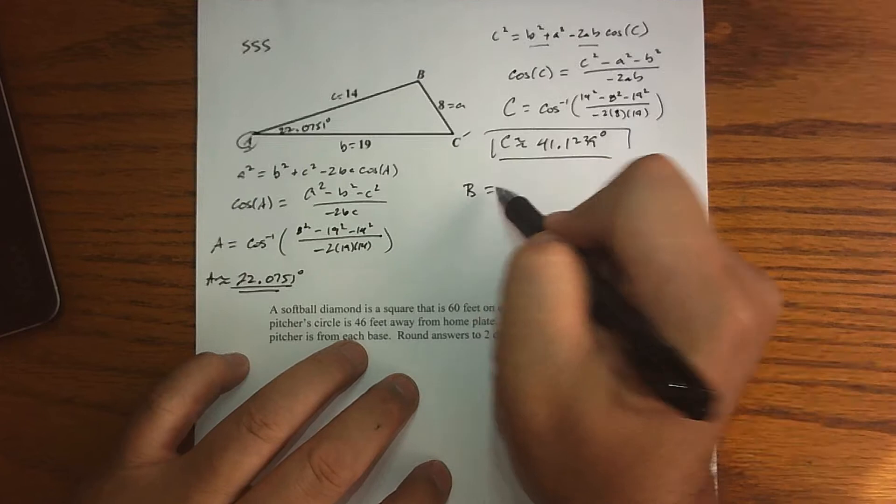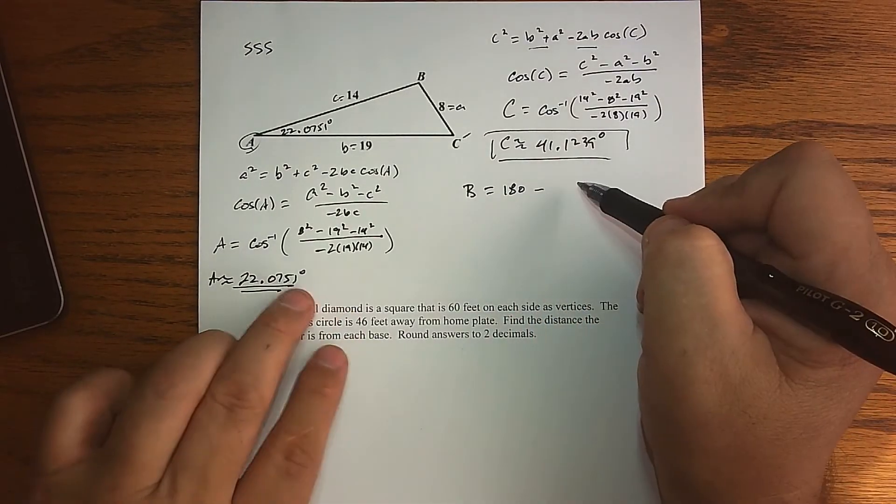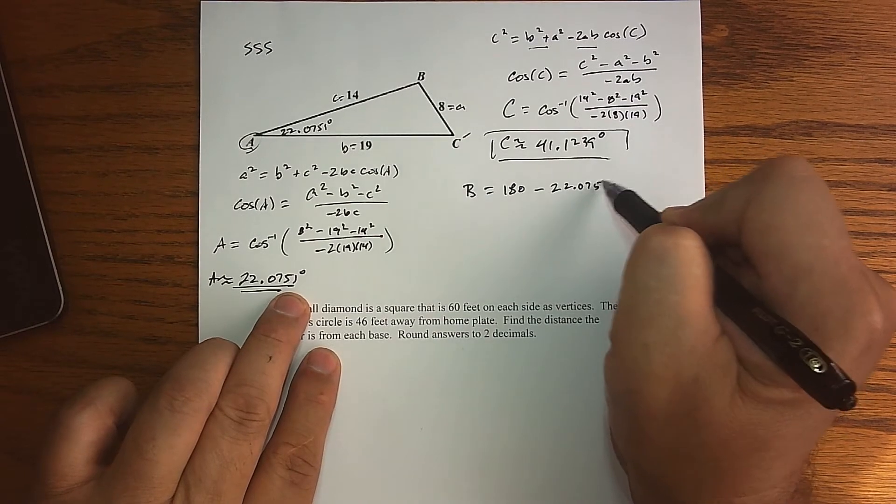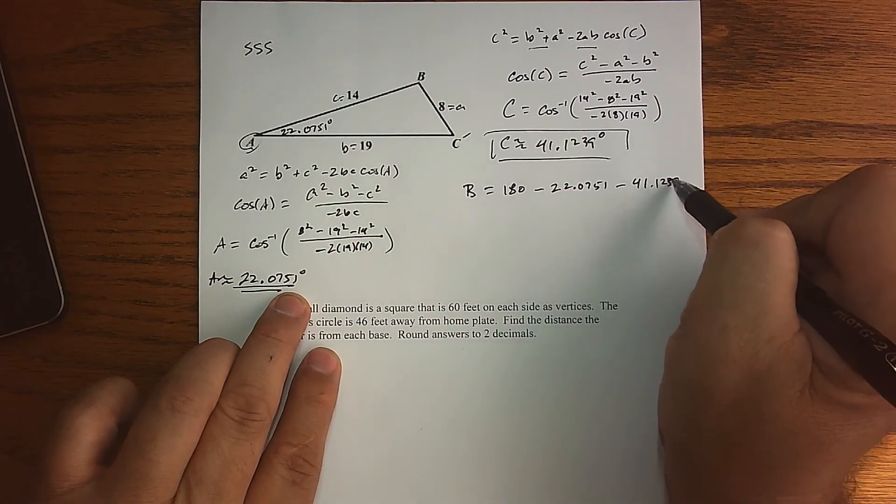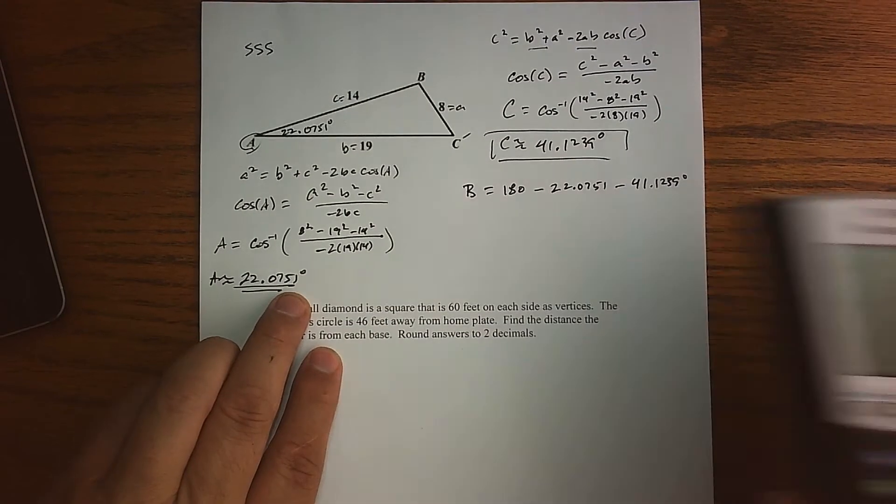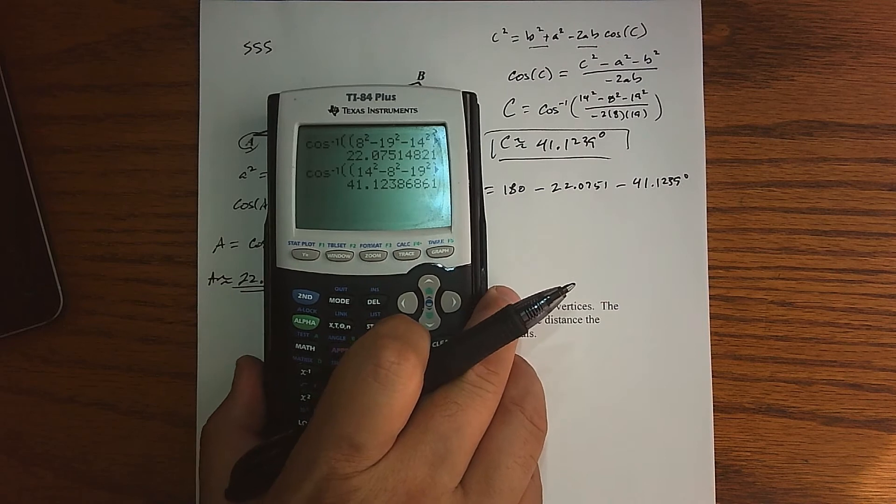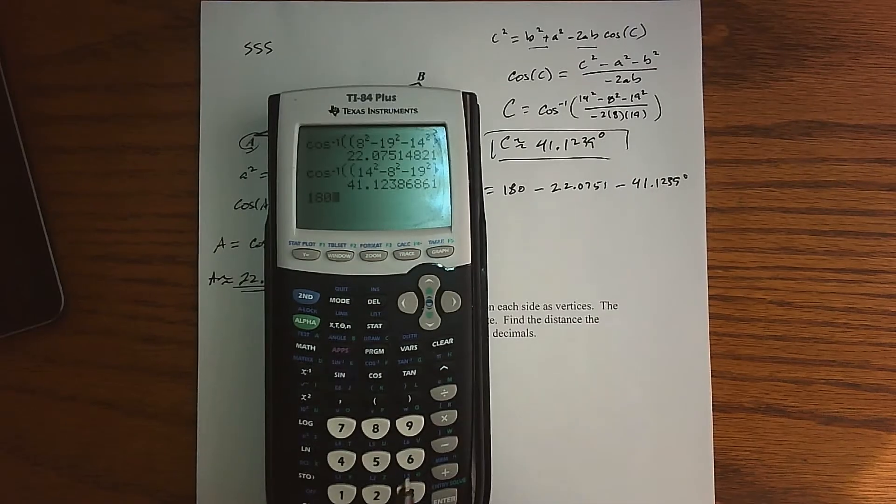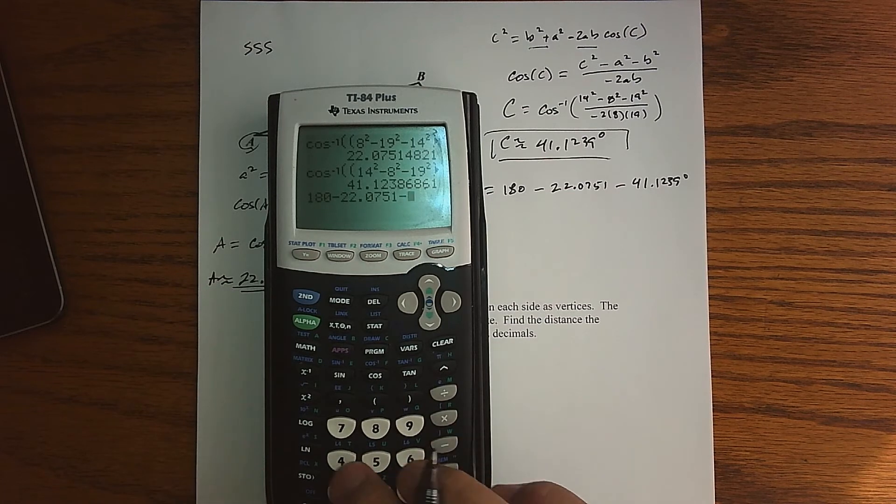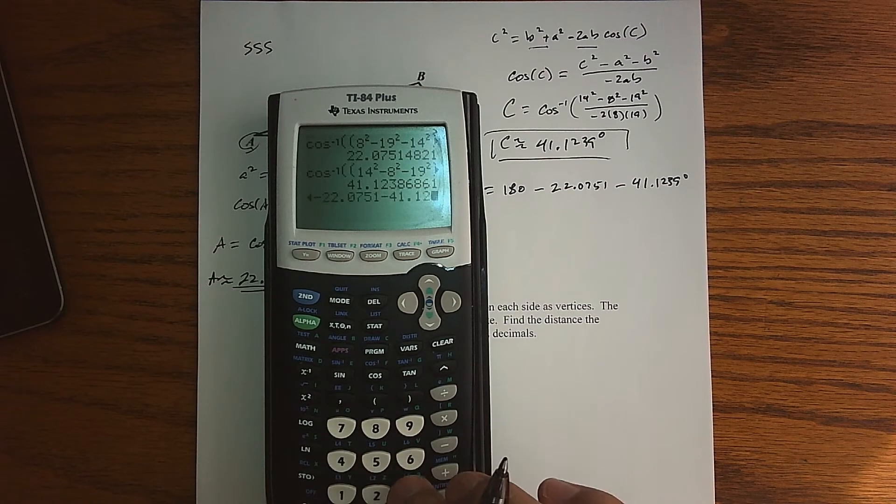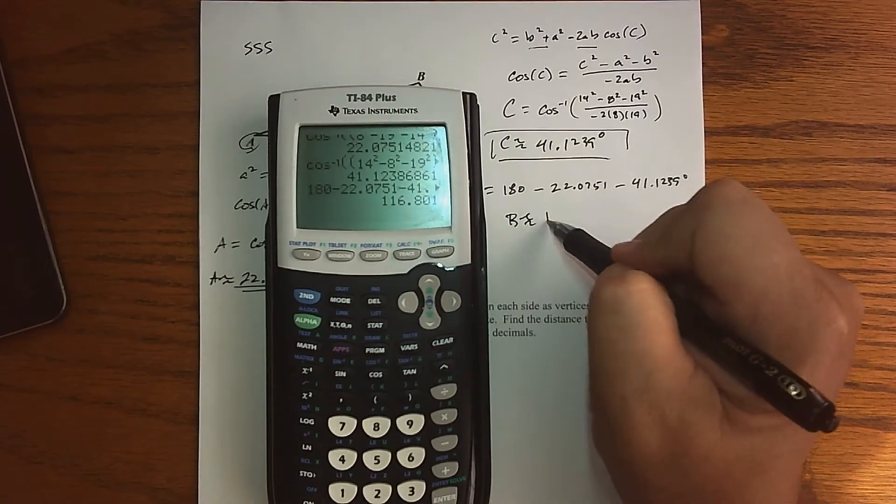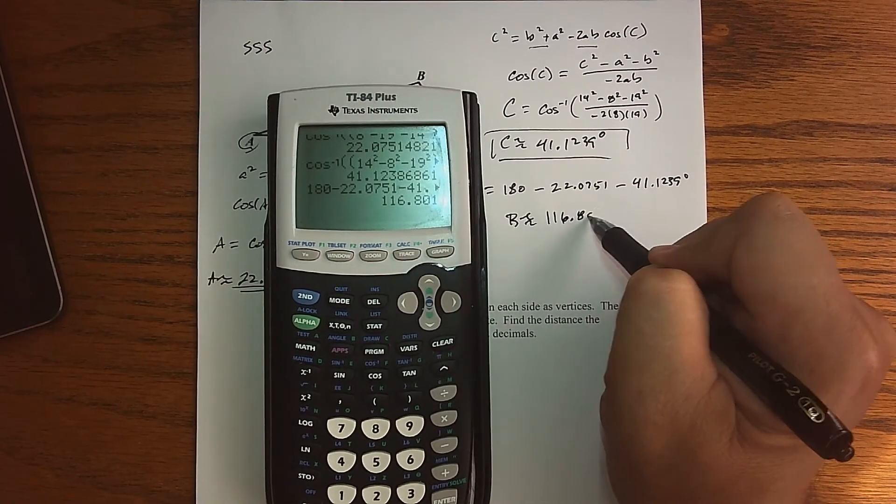And so to find my angle B, how about we just take 180, subtract my angle A, subtract my angle C, and we get our angle B. All right, so I'm just using the law for angles equal 180. So 180 minus 22.0751 minus 41.1239, and it looks like we get B is roughly 116.801.